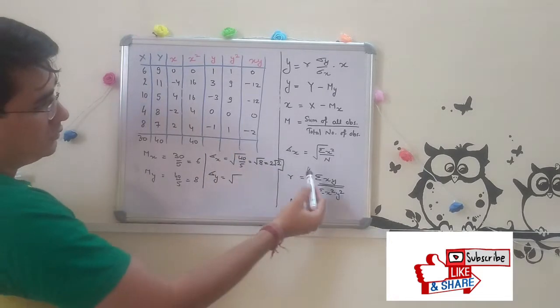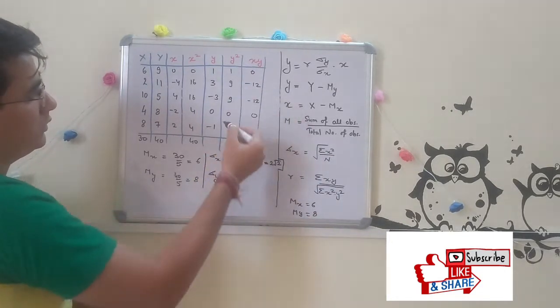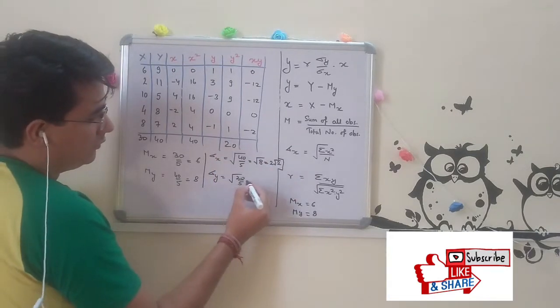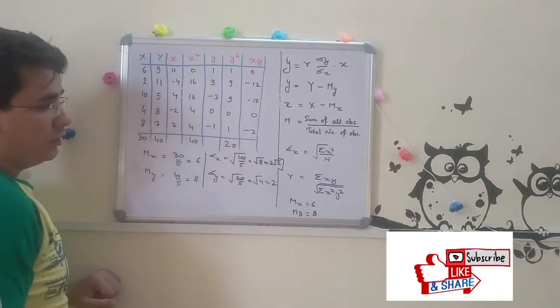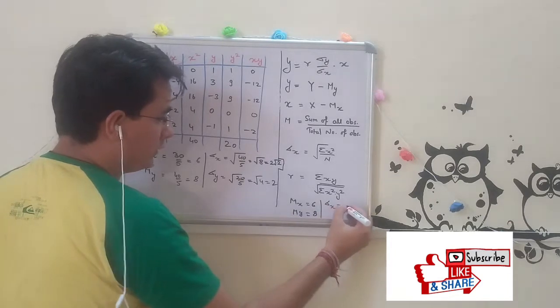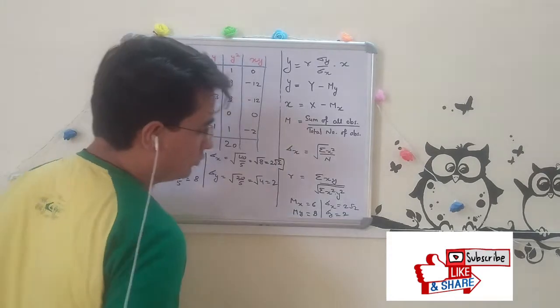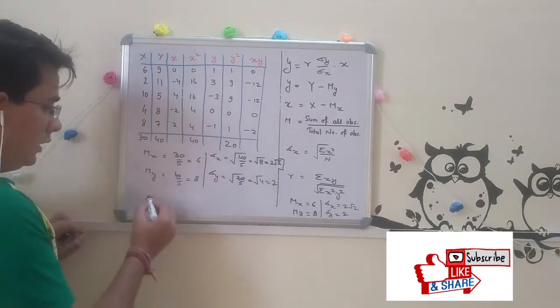Add the sigma y square and add this: 10, 20. 20 over 5 will be 4. Root of 4 is 2. So we got standard deviation of x: 2 root 2, standard deviation of y is 2.